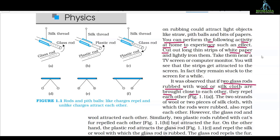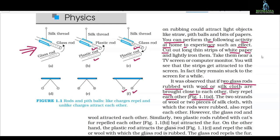It was observed that if two glass rods rubbed with wool or silk cloth are brought close to each other, they repel each other, as you can see in figure 1.1a. This glass rod and that glass rod — when you bring them together they will repel each other. With a silk thread and plastic rod there is a different phenomenon — they will attract. Glass rod and plastic rod have opposite charges: the glass rod got positive charge and the plastic rod got negative charge. So if the same charges, they will repel; if they have opposite charges, positive and negative, they will attract.